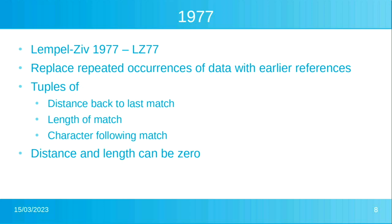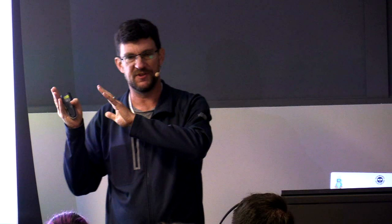The way LZ77 works is that we look at the output. We're either outputting literal data, or we have a way of saying there's a repeat already in the output stream and we refer back to it. In the original paper, there's a tuple: the distance back to the last match, the length of that match, and the next character to output. If we have no match, we output zeros and output characters one at a time. It basically looks back into a sliding window over past output to find matches the encoder can efficiently transmit, and the decoder knows to find in that window.